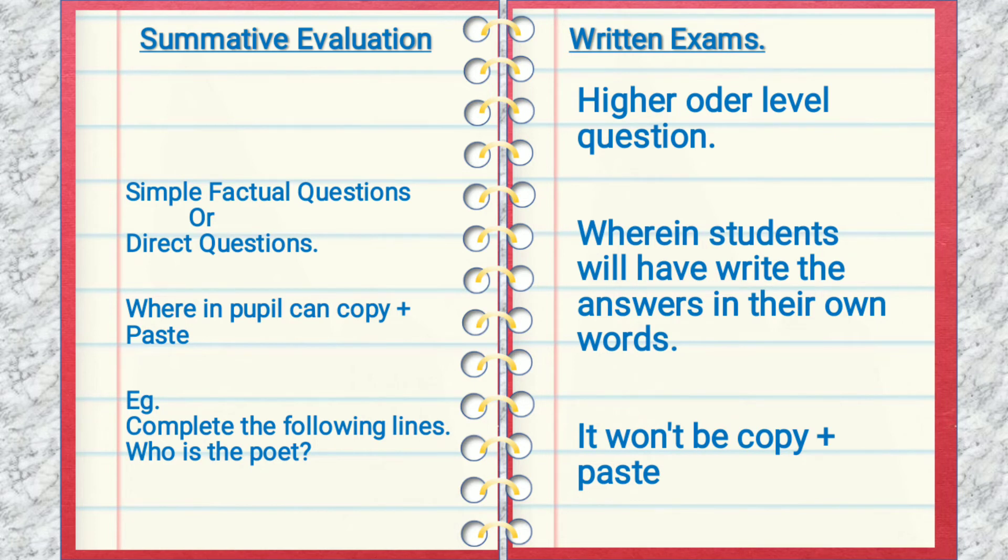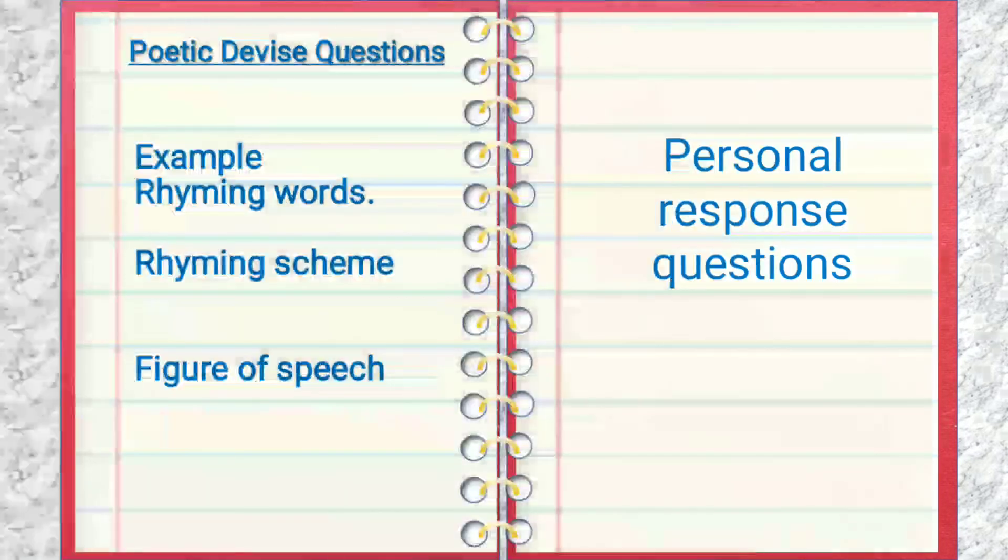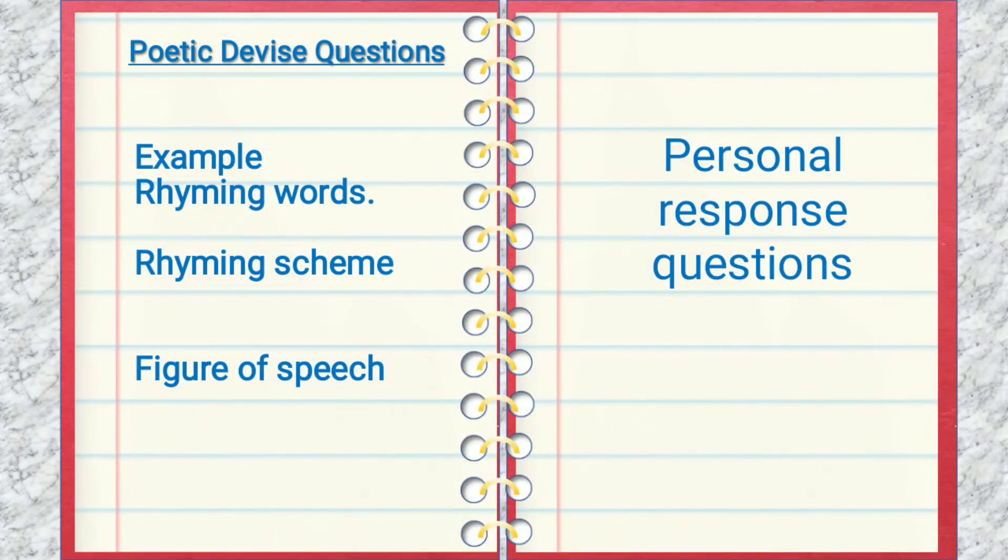In the higher order level question, because it is a difficulty level question, next you will have the poetic device question. In the poetic device, you will have rhyming words, rhyming scheme, and figure of speech. For example, 'Give the rhyming words from the following verses,' or 'State the rhyming scheme of the following verse.'